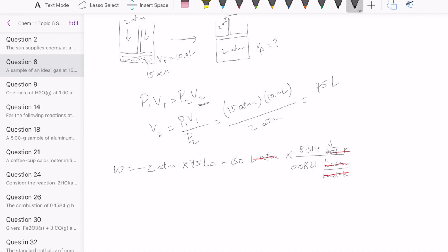Doing that calculation gives me a value of 15.2, and I'm going to convert this directly to kilojoules. So it would have been 15,200 if you keep it in joules, but it's just negative 15.2 kilojoules.